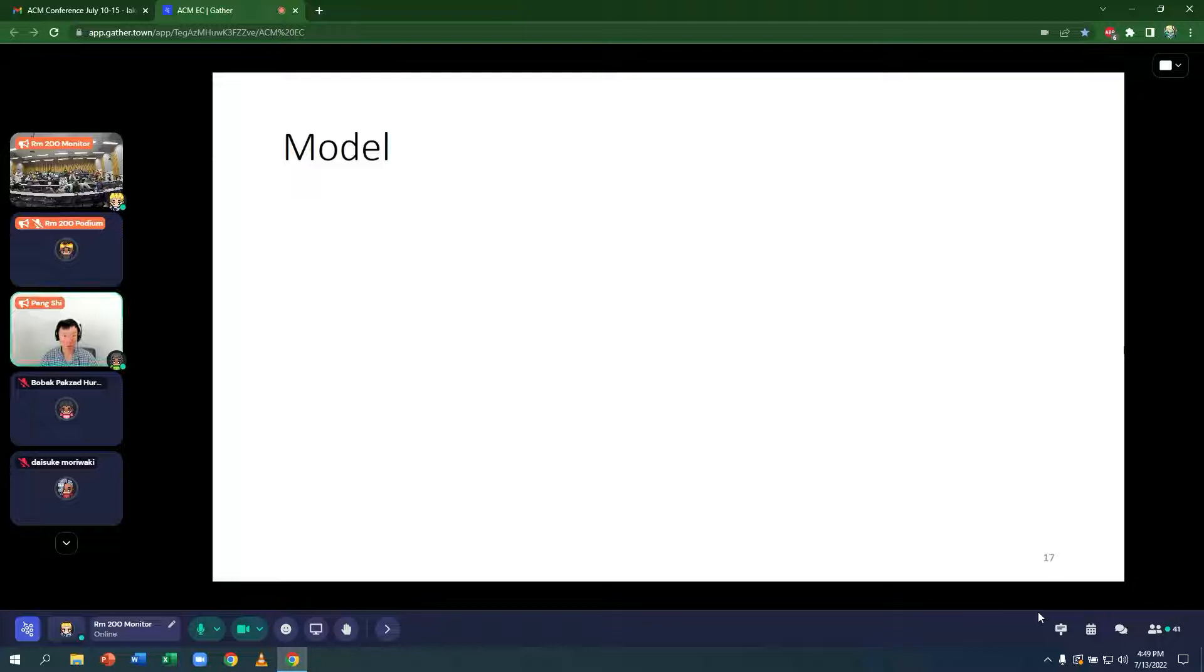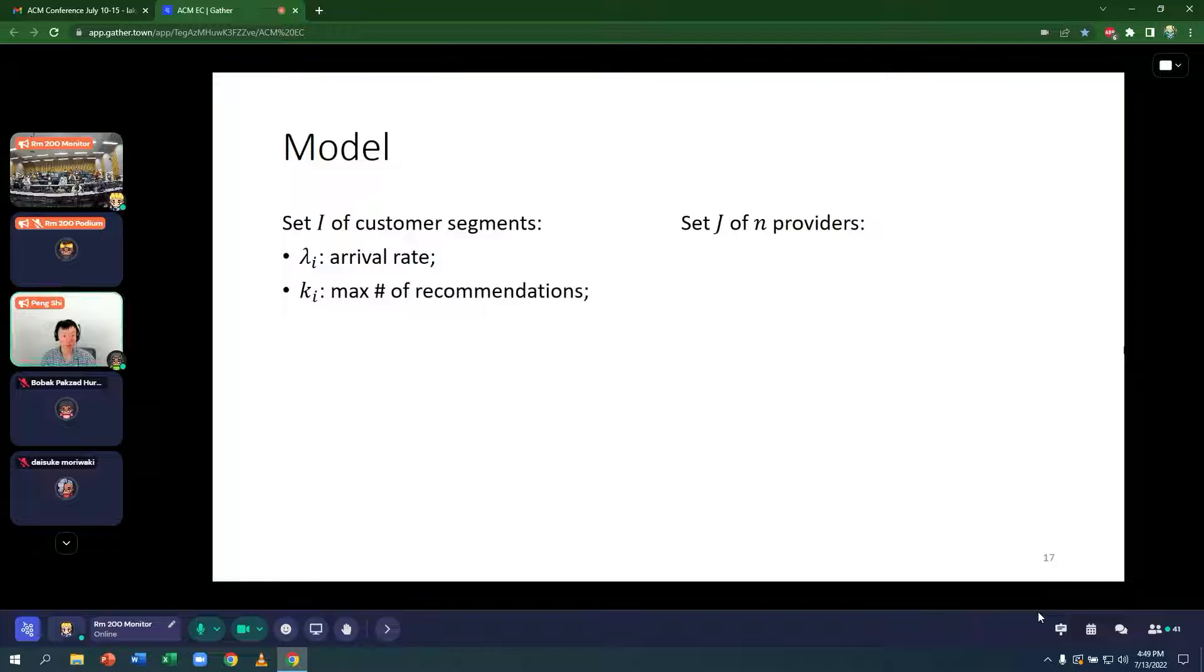Let me now talk about the model. There are two sides. On the left, we have a set I of customer segments. On the right, we have N providers. For each segment I, we have an arrival rate, how many customers who want kitchen remodel with no floor plan changes arrive per month.